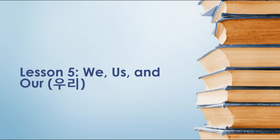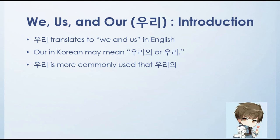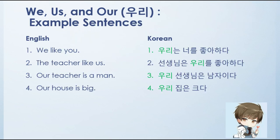For our final lesson, we have we, us, and our. Uri translates to we and us in English. Our in Korean can be uri-e or uri, but uri is more commonly used since possessives are often omitted. Example sentences: 'We like you' — uri nun, narul, jowahada. You in Korean is no, so adding rul gives narul. 'The teacher likes us' — sonsing nimun, uri rul, jowahada. 'Our teacher is a man' — uri, sonsing nimun, namjada. Remember the noun-equals-noun construction. 'Our house is big' — uri, jibun, kuda. Uri is our, house is jip, and un or nun is added to the subject.